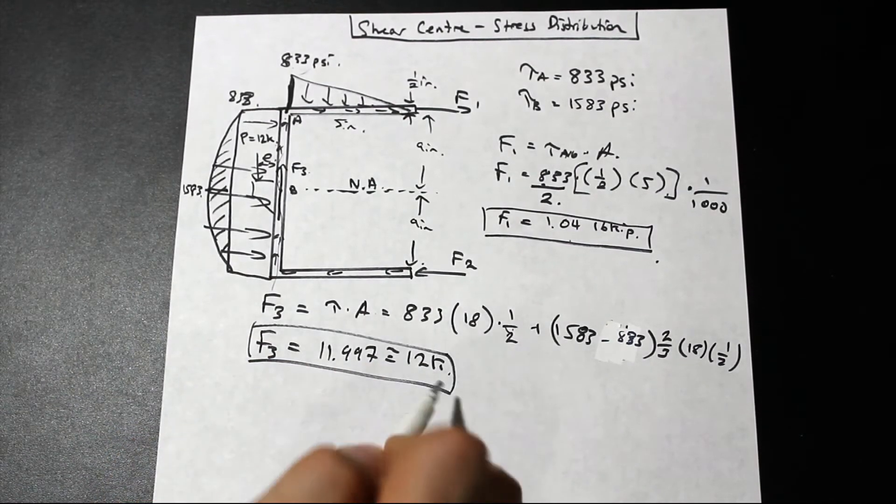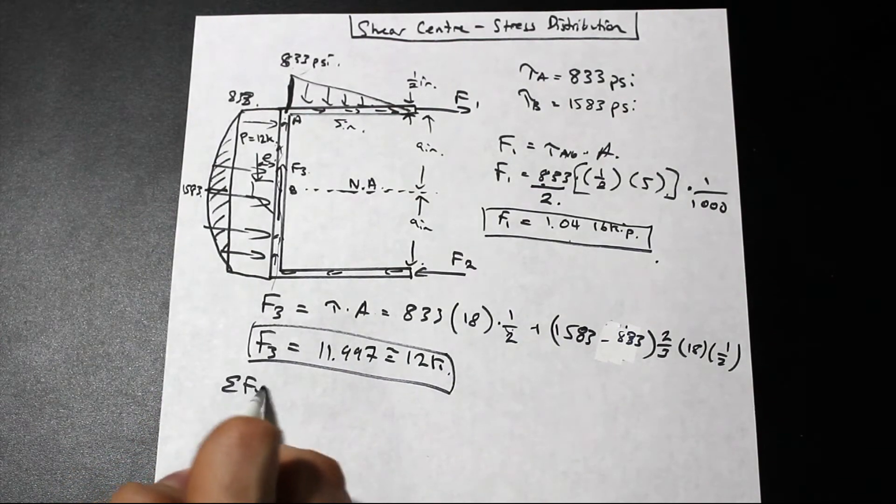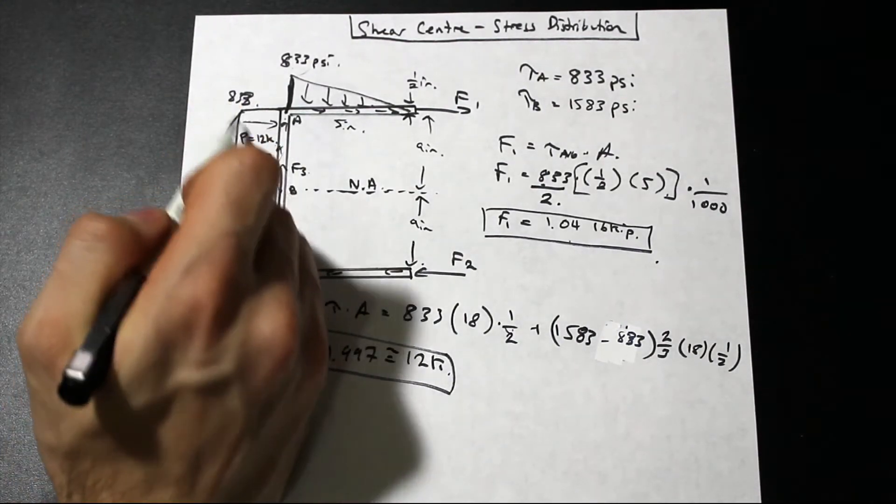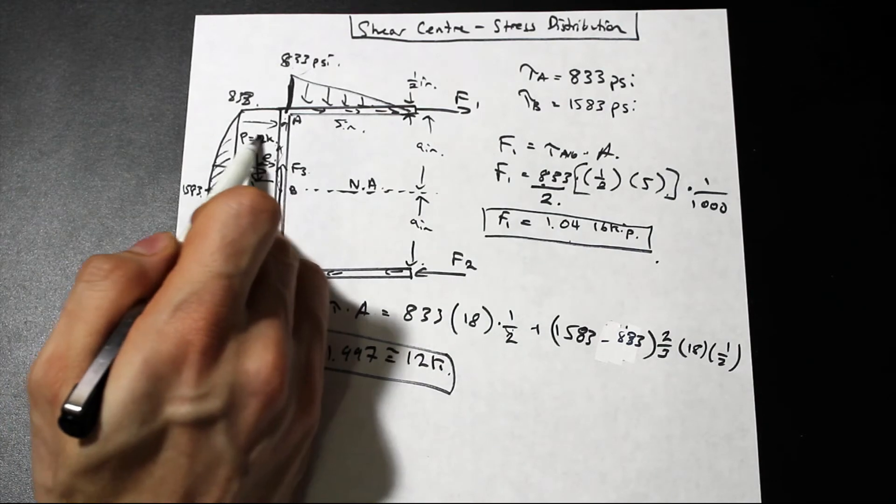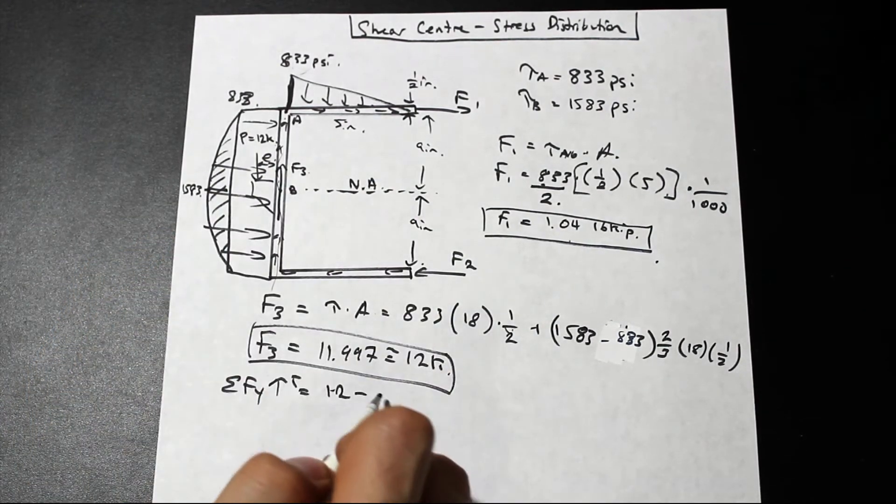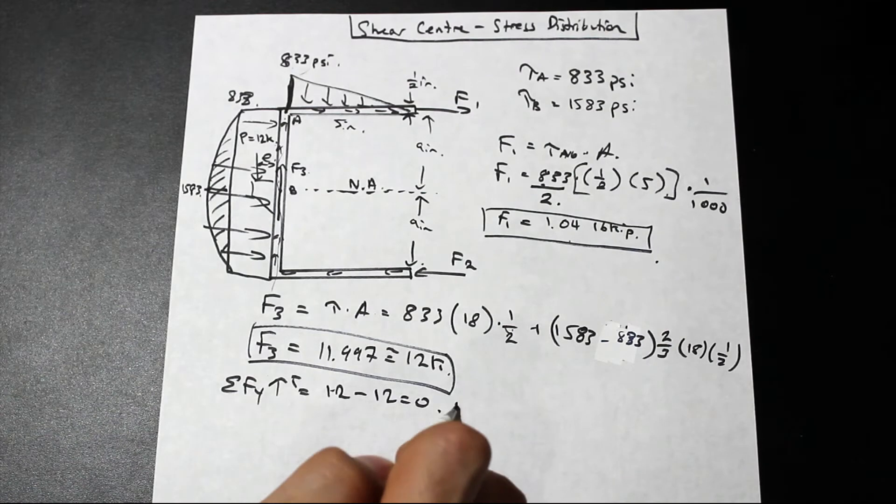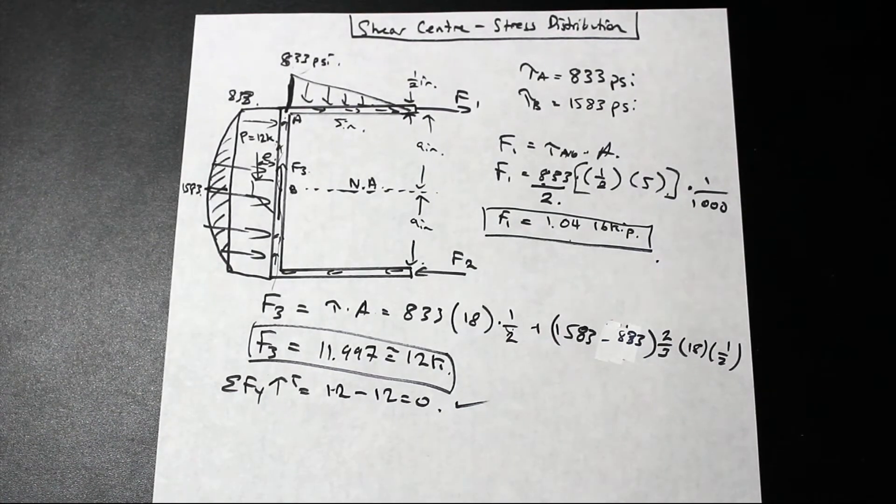And as you'll see, once we take the sum of the forces in Y, we have this 12 kip force acting down, and we have F3 acting up, and that's going to be equal to zero, which is a good check. That is pretty much it.